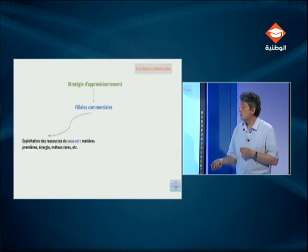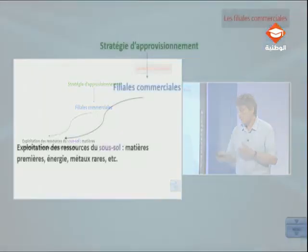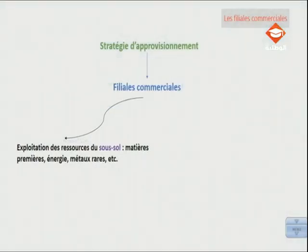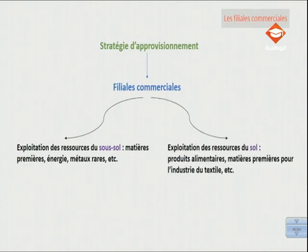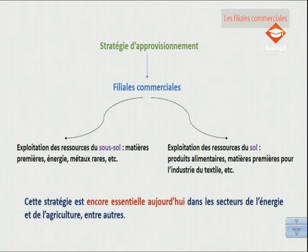Cette stratégie des multinationales primaires — primaires parce que ces multinationales s'approvisionnent en produits primaires : énergie, biens agricoles, etc. — est encore répandue dans les secteurs miniers, énergétiques et métallurgiques. D'après ce texte, les premières firmes multinationales, les firmes multinationales primaires, ont implanté des filiales commerciales dans une optique d'approvisionnement, pour exploiter les ressources du sous-sol telles que les matières premières, l'énergie, les métaux rares, mais aussi les ressources du sol telles que les produits alimentaires et les biens agricoles.